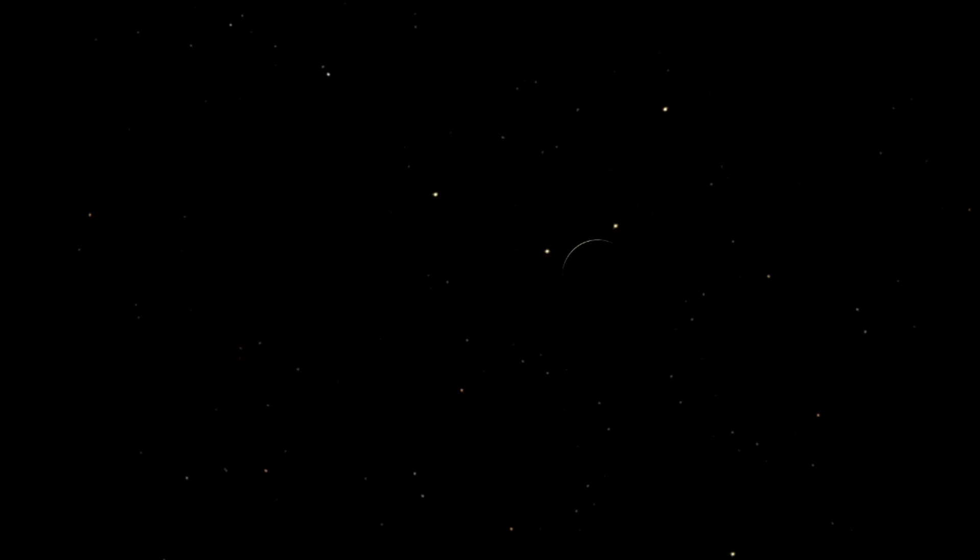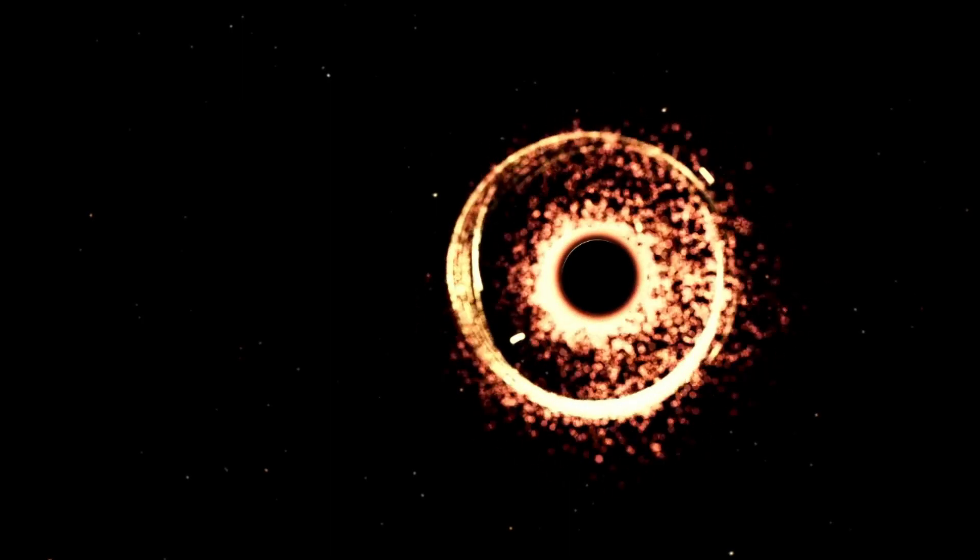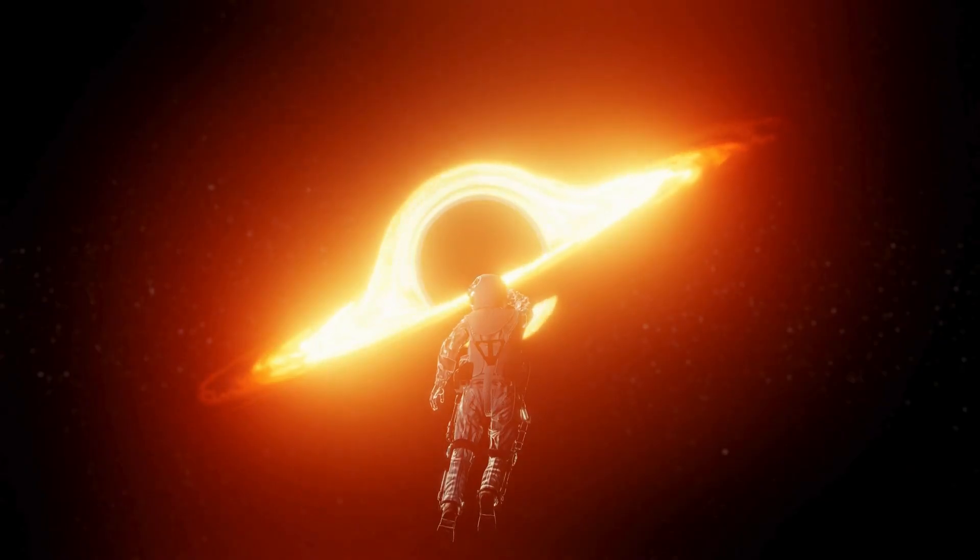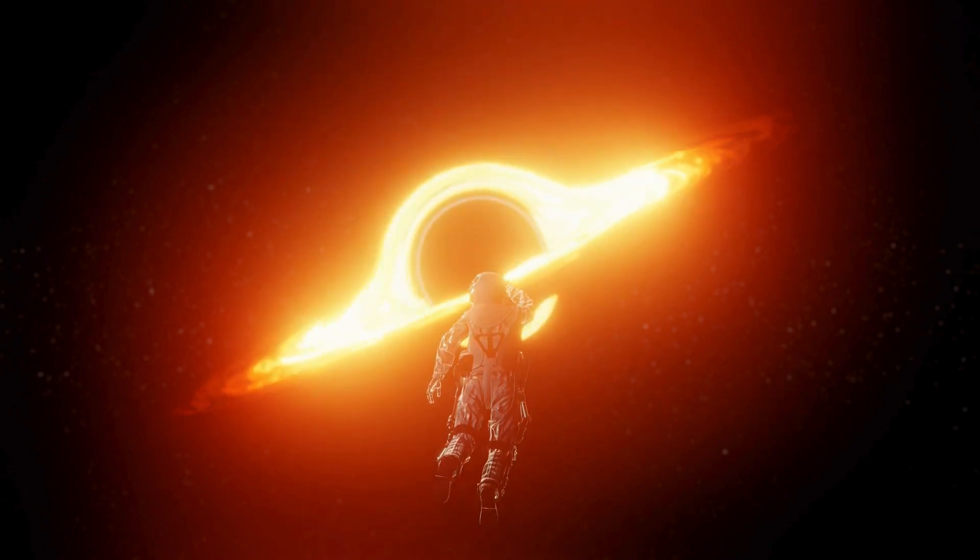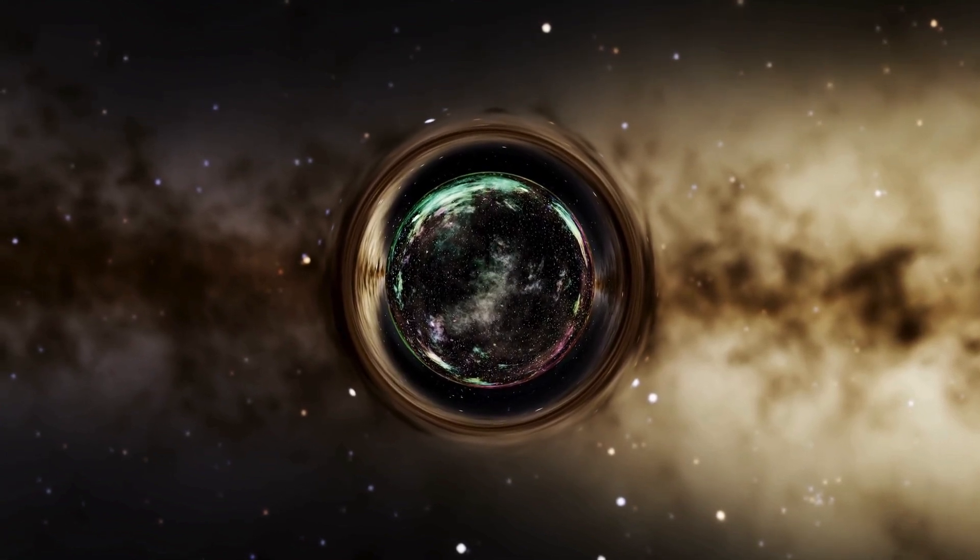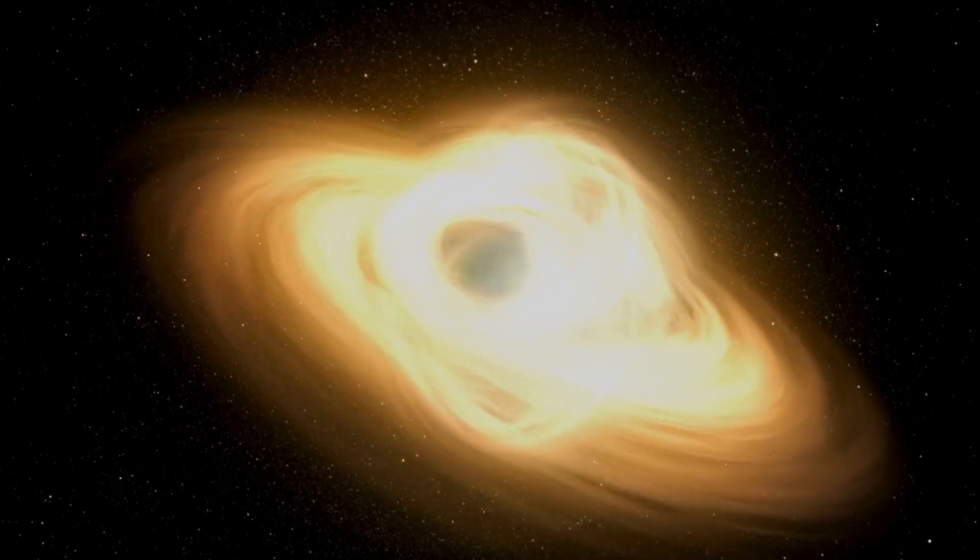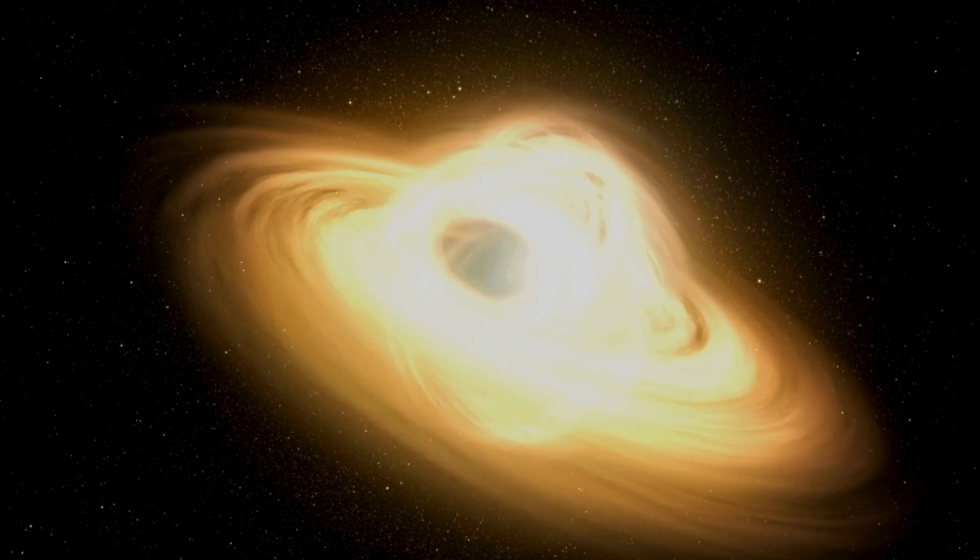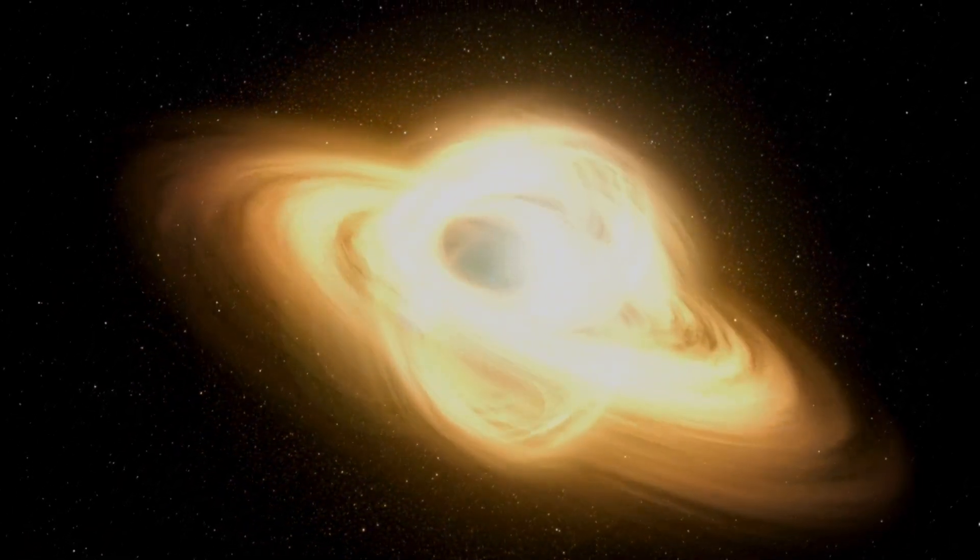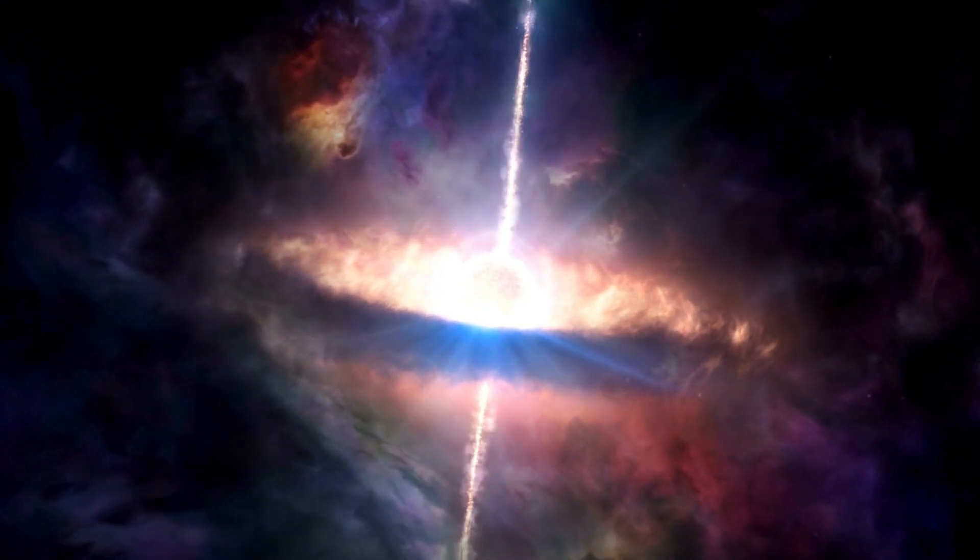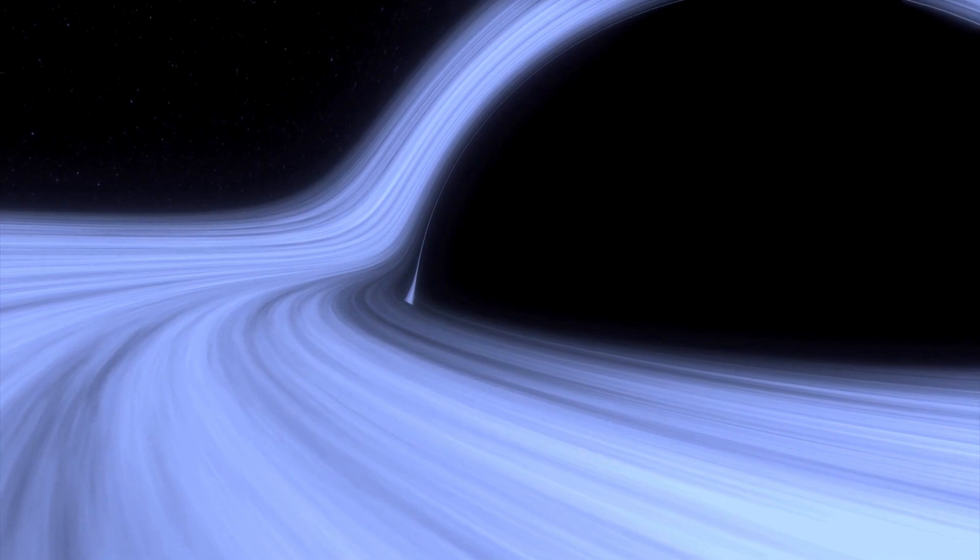Recognizing black holes is no easy task since they emit no light. However, researchers have found ways to infer their presence by observing their effects on nearby matter. For instance, if a black hole passes through a cloud of interstellar matter, it'll pull that matter towards it in a process called accretion. Furthermore, when a normal star gets too close to a black hole, it can get destroyed, emitting x-rays as it does so. Black holes also have a significant effect on their environments. They can consume nearby stars, produce powerful gamma-ray explosions, and even influence the formation of new stars in some regions while slowing it down in others.